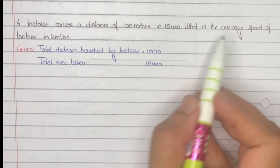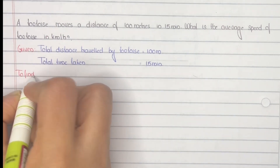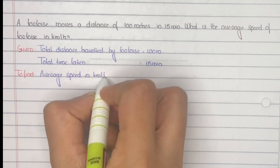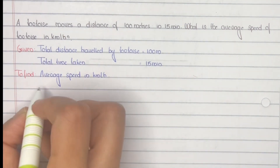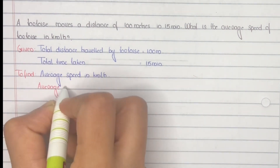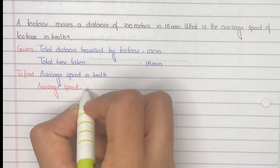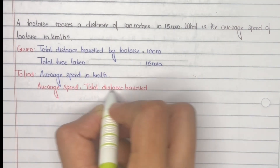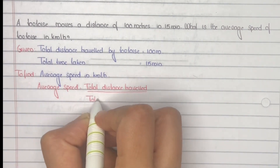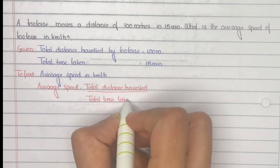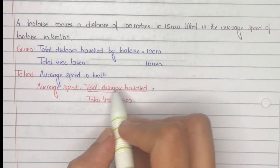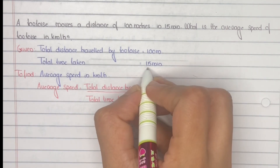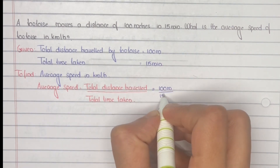To find average speed in kilometers per hour, the equation is: average speed equals total distance traveled divided by total time taken. Here, total distance is 100 meters and total time taken is 15 minutes. So average speed equals 100 meters divided by 15 minutes.